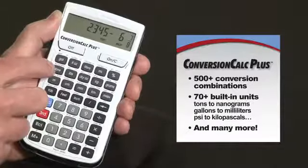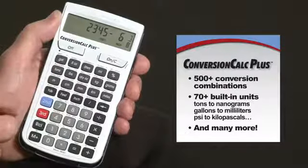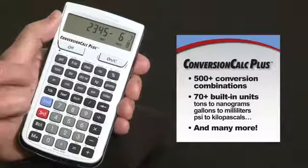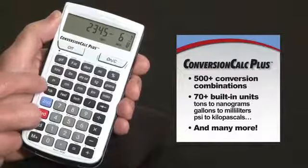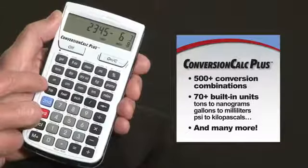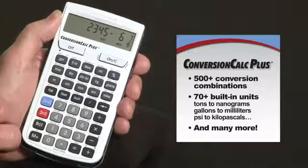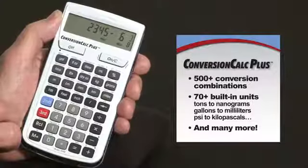We have weight and weight per volume conversions, from tons down to nanograms. There's linear area and volume, from miles and acres down to cubic millimeters, plus many more for pressures, torque, energy, temperatures, and more.